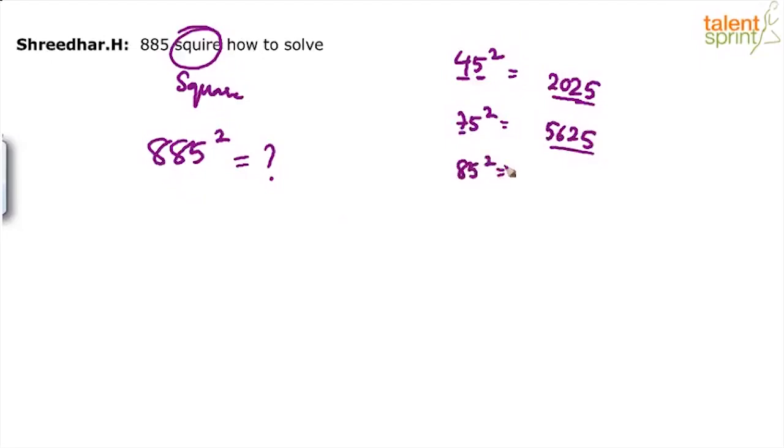Let's say we need 85 square. 8, 9 is 72. 7225. This is how we find out squares of numbers ending in 5.